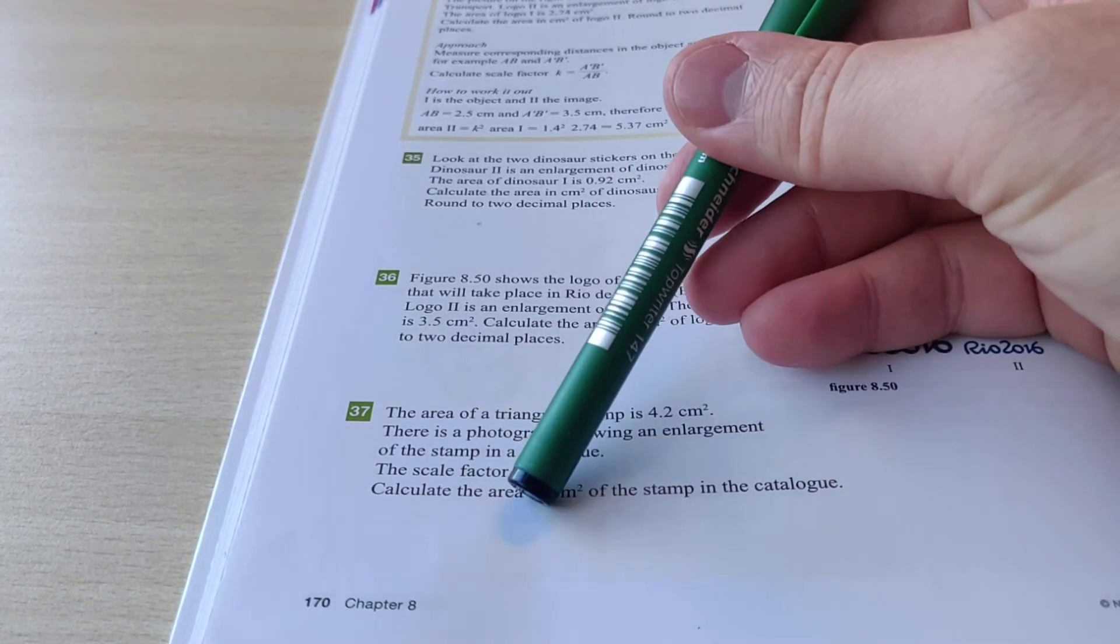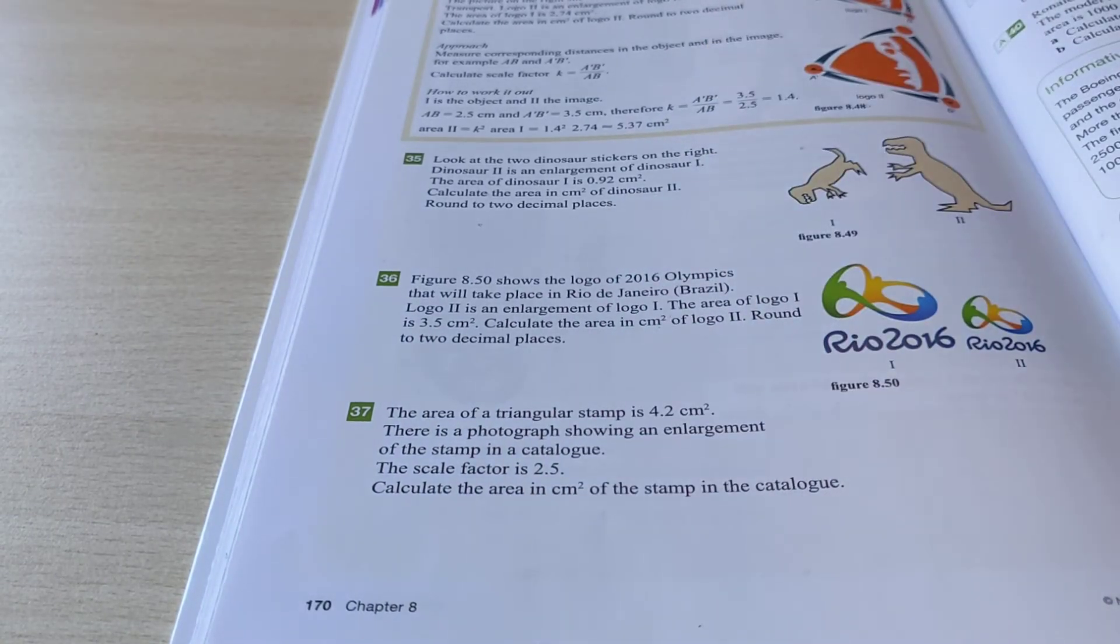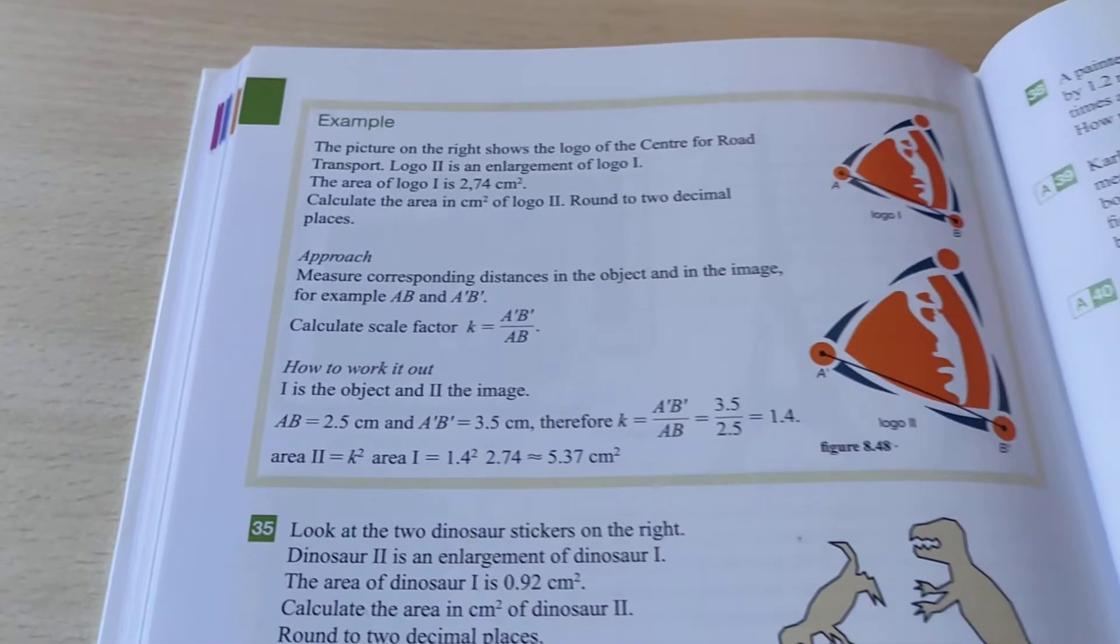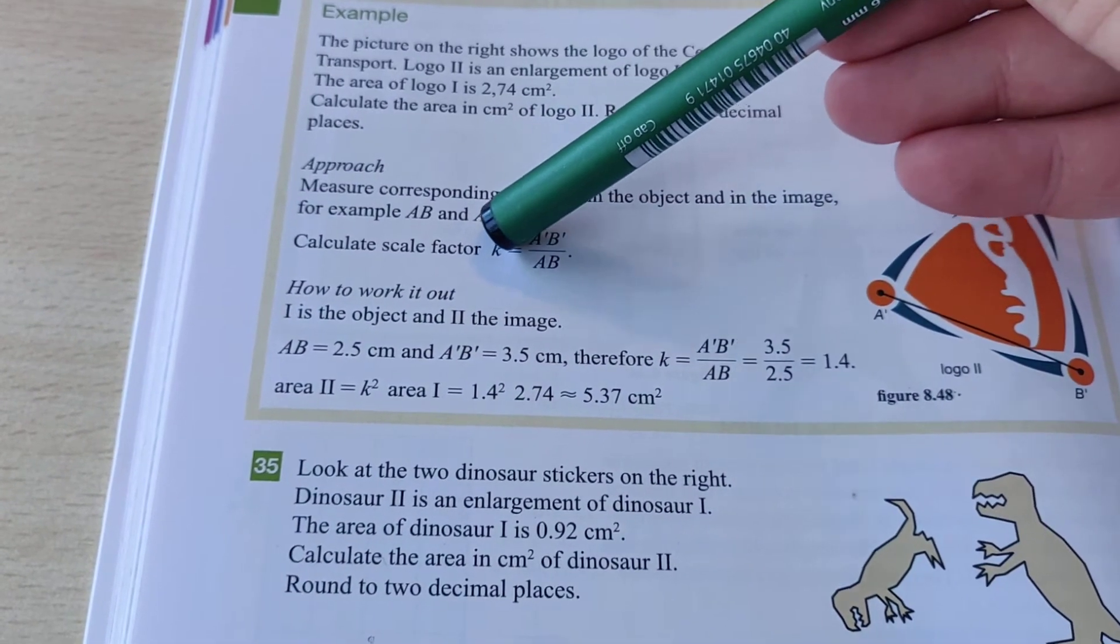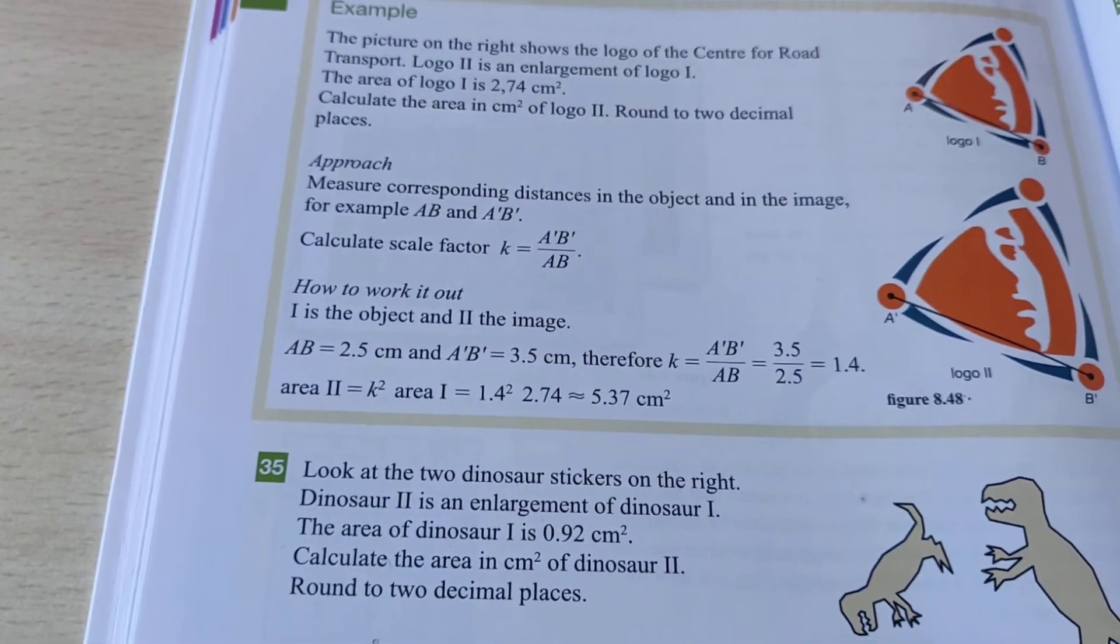But if you talk about an area, you have to do the scale factor squared. They also say that here in the example, if the scale factor, I call that k, here the letter k, and then for the area you have to use k².